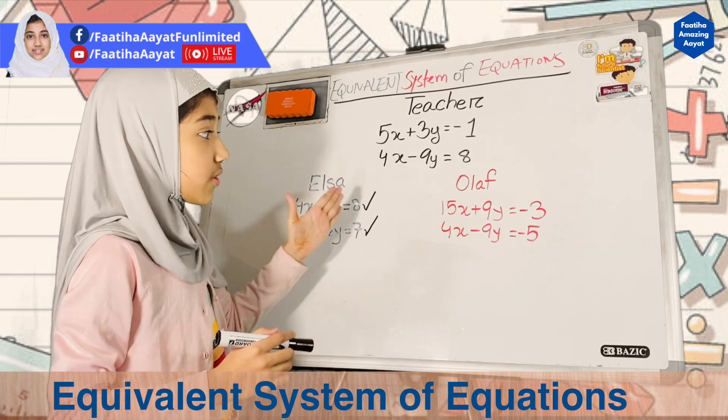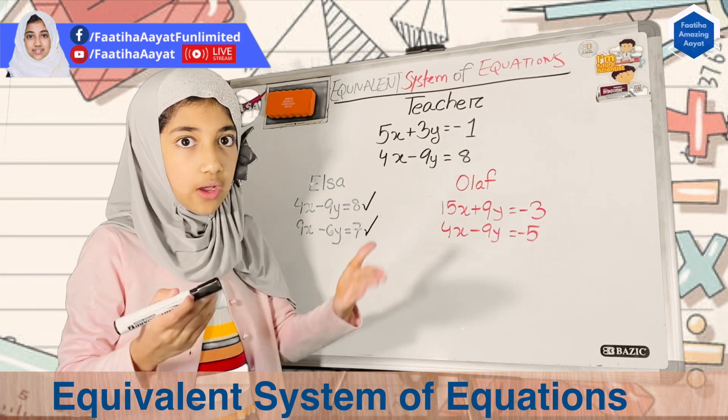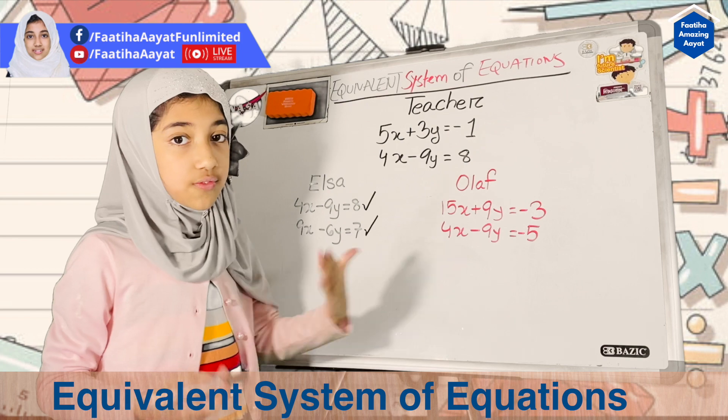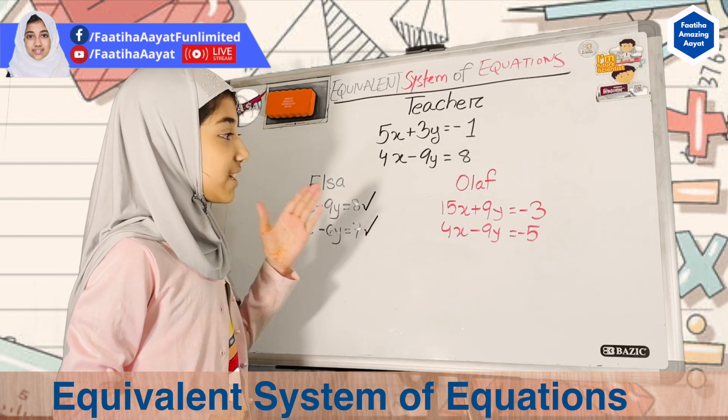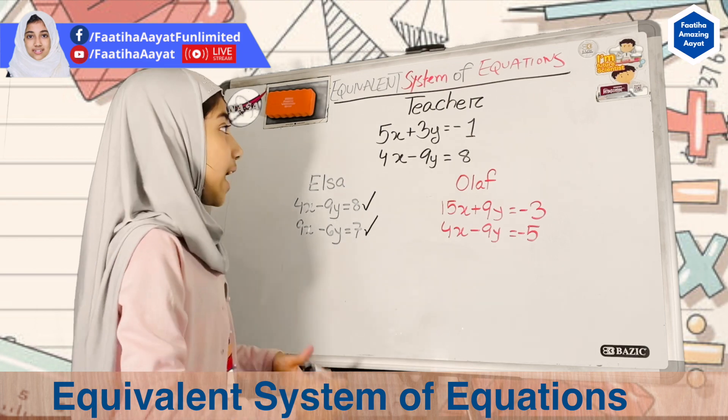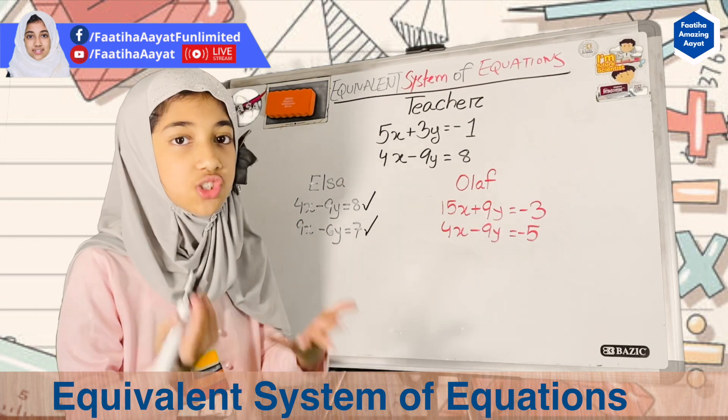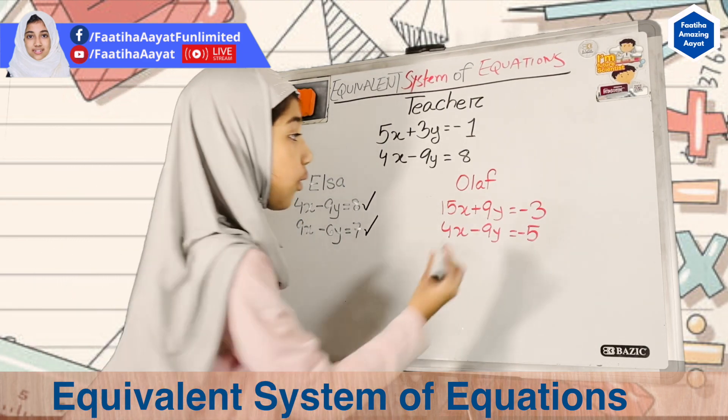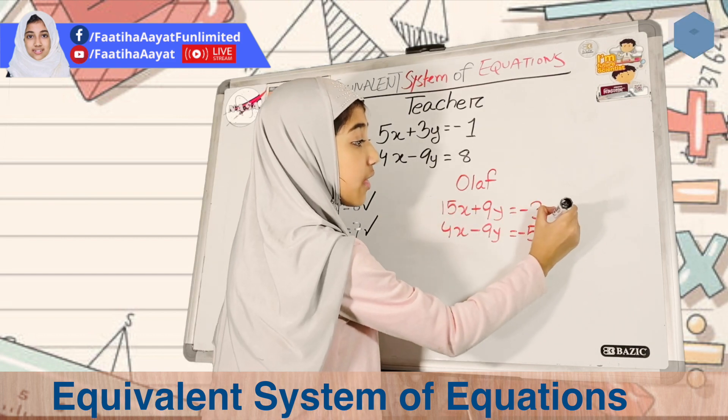5x times 3 is 15x because 5 times 3 is 15. 3y times 3 is 9y, plus 3 times 3 is 9, and minus 1 times 3 is minus 3. So that is how Olaf is also correct with his first equation.